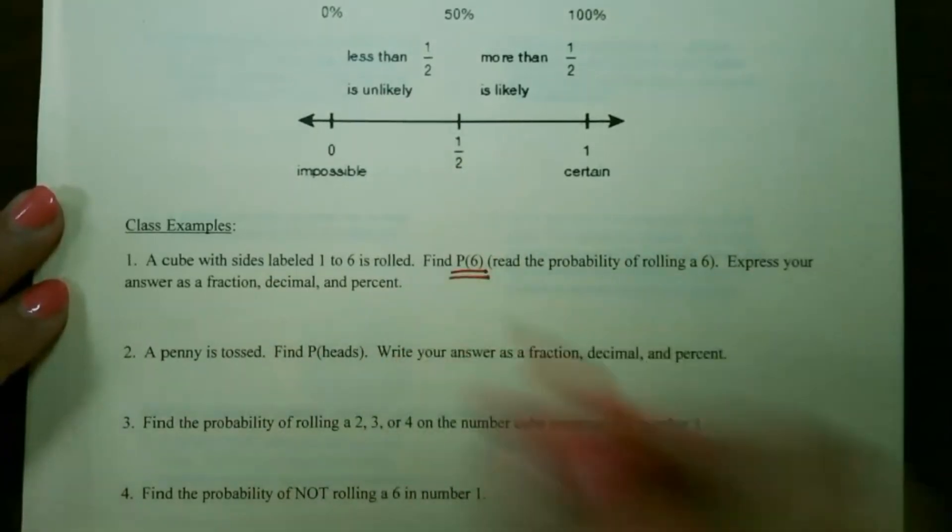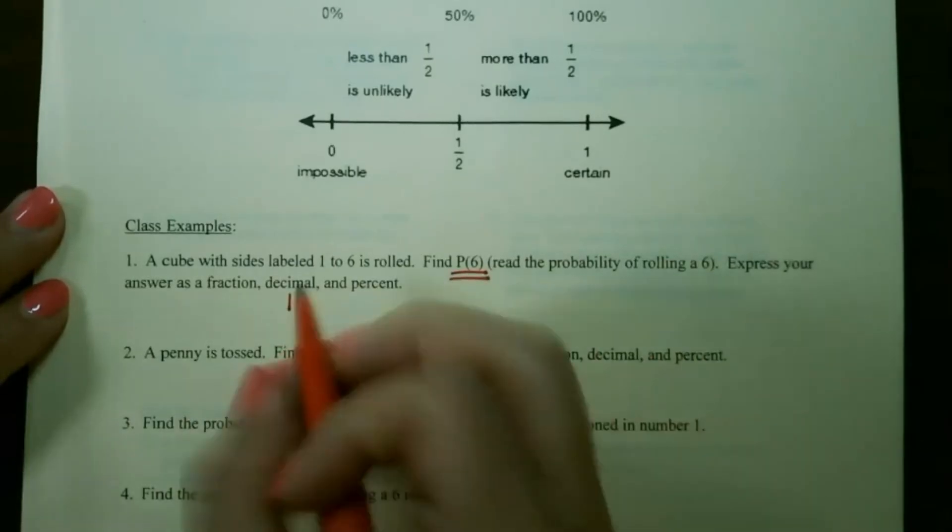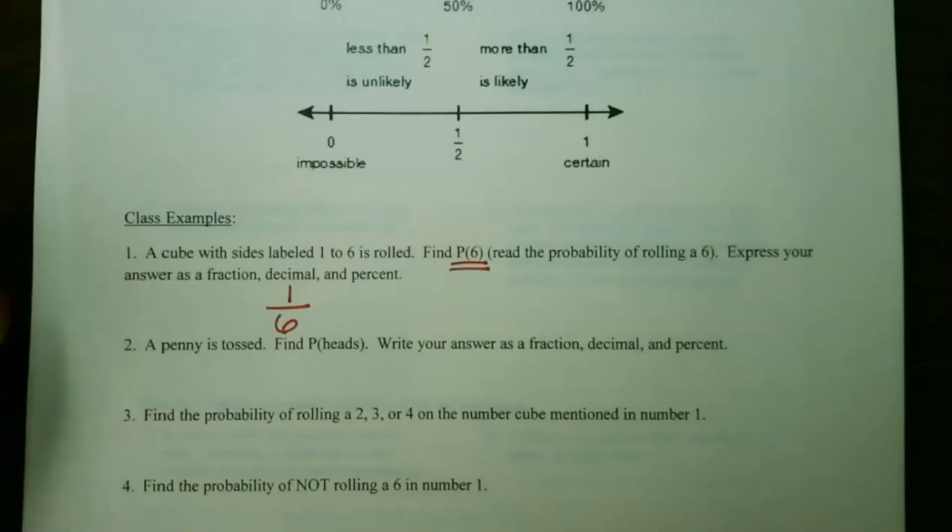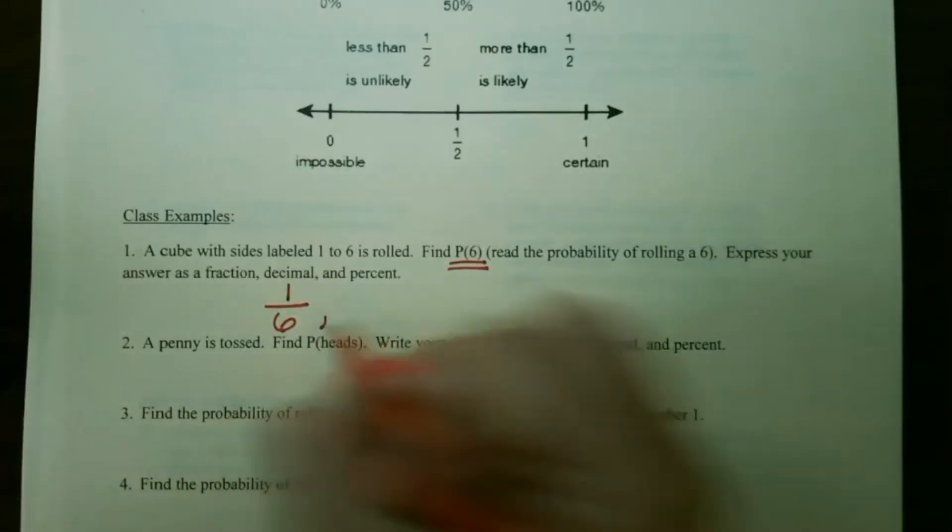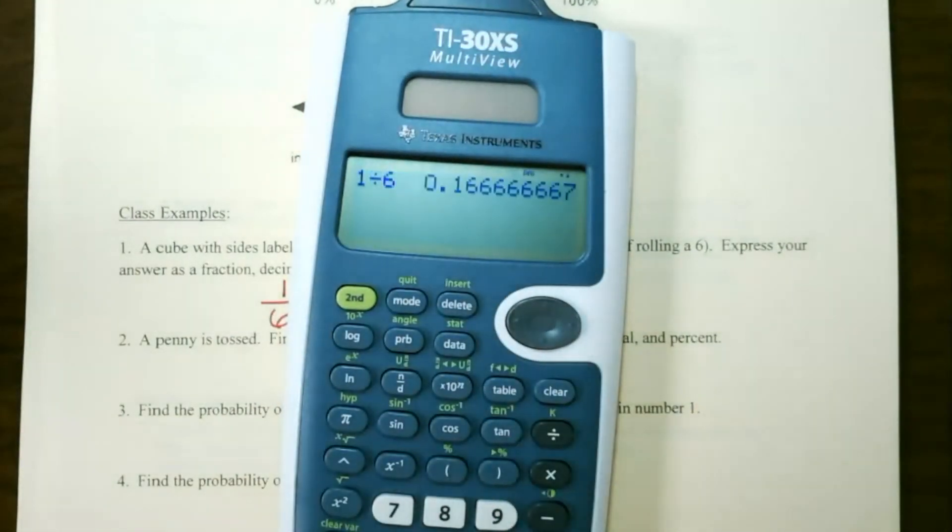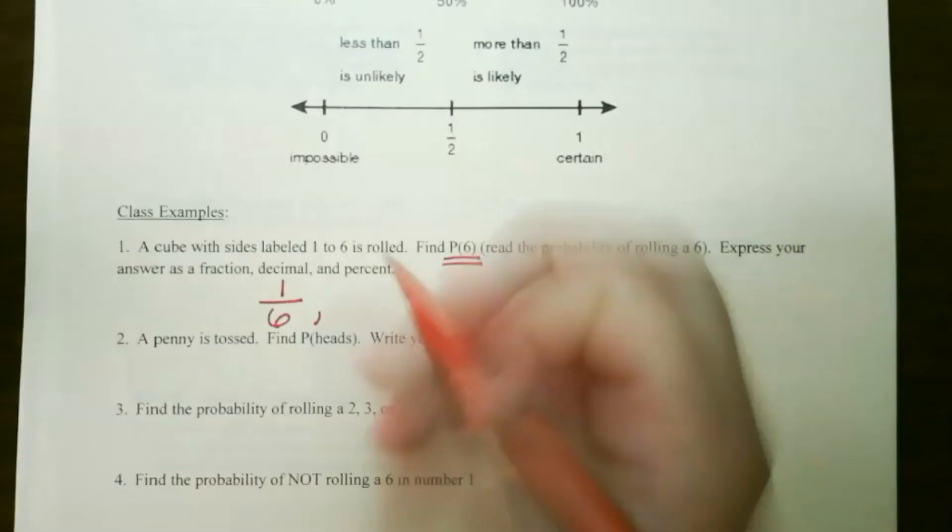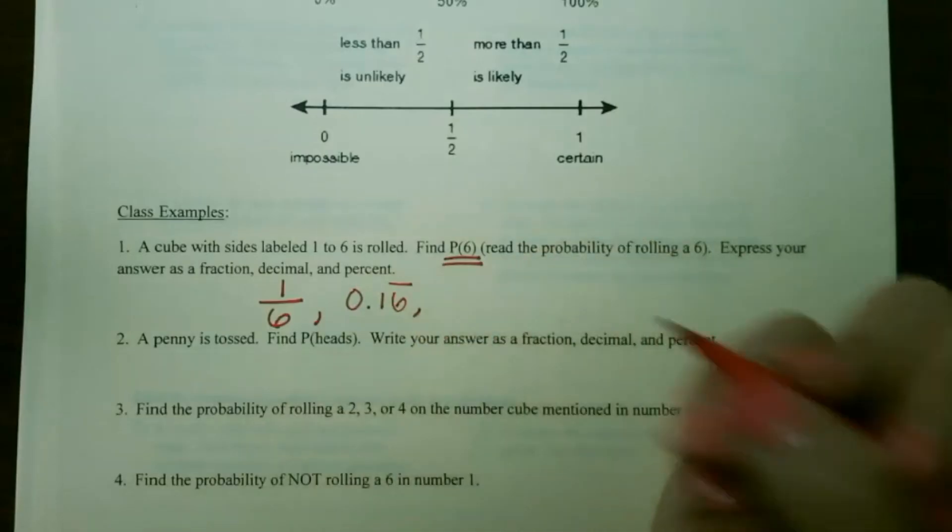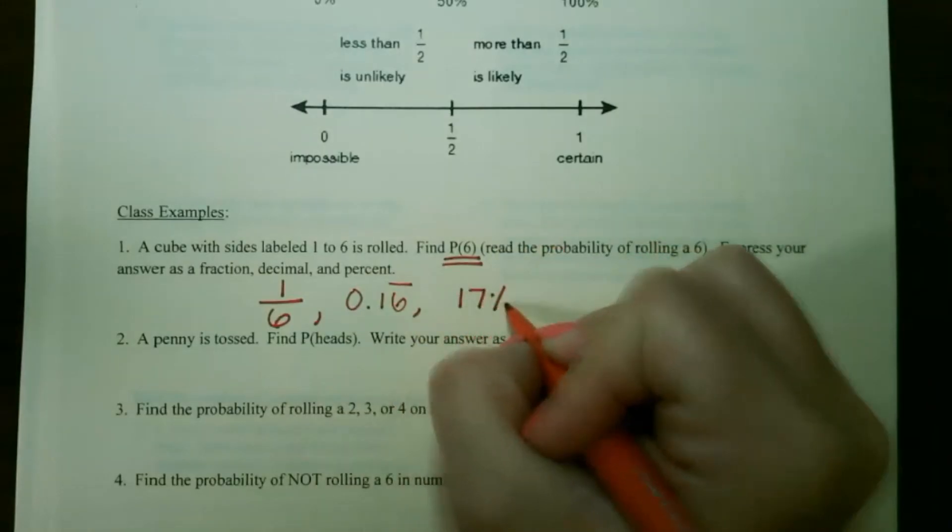So I can only roll a 6 one time, and there are 6 total outcomes. So that would be 1/6 as our probability as a fraction. In order to write this as a percent, you simply plug into your calculator 1 divided by 6. This gives you the decimal 0.16 repeating, and since that 6 is repeating, it would round up to 17 percent.